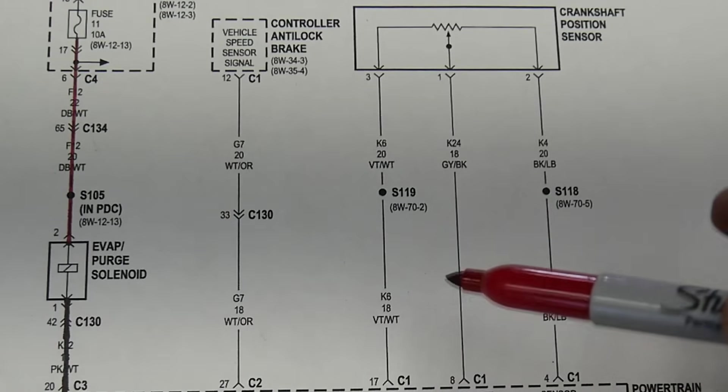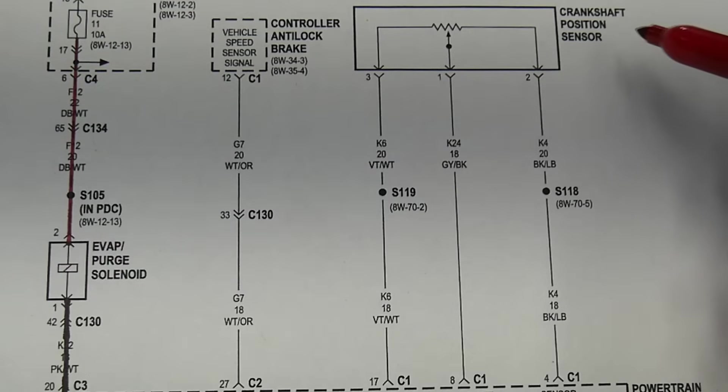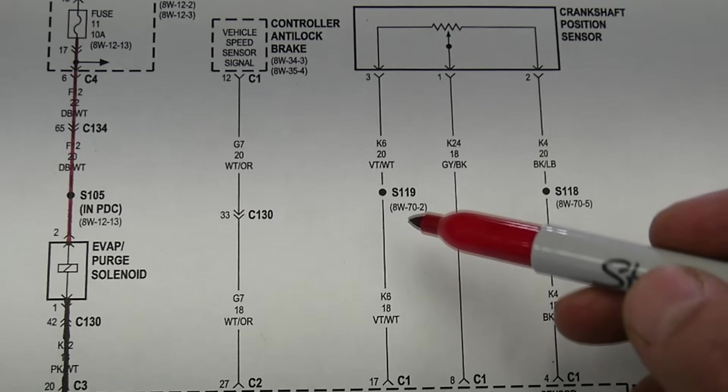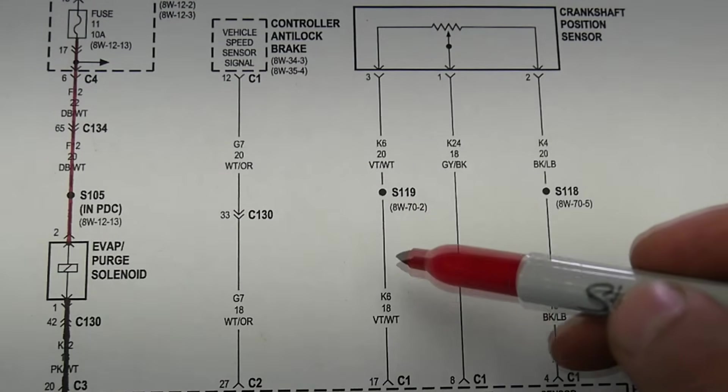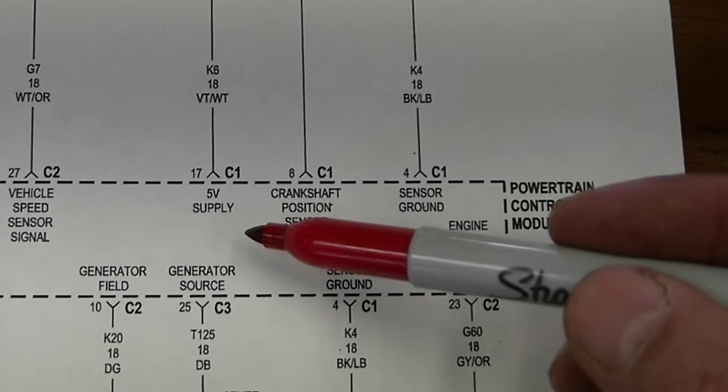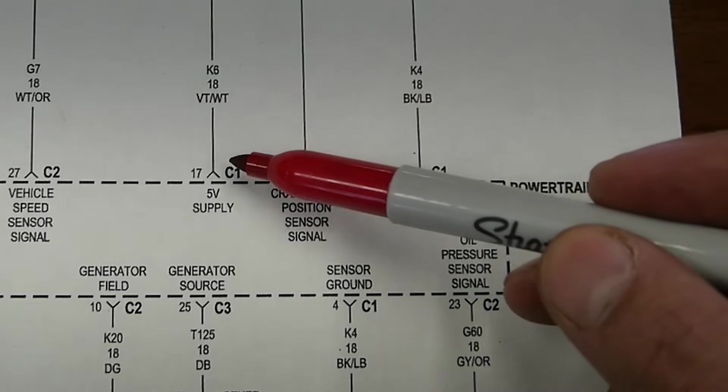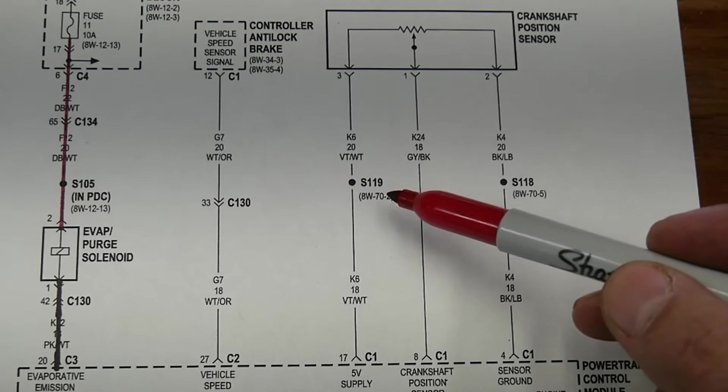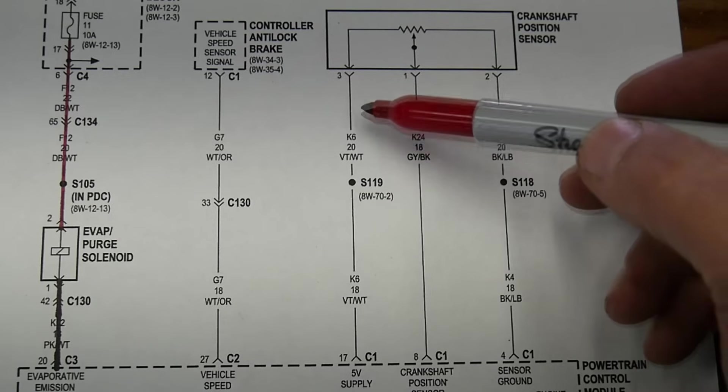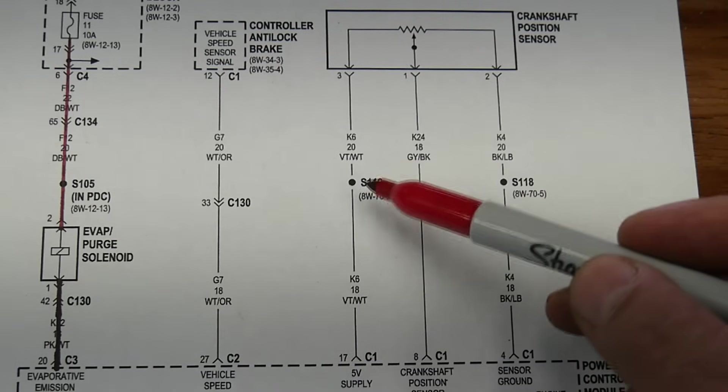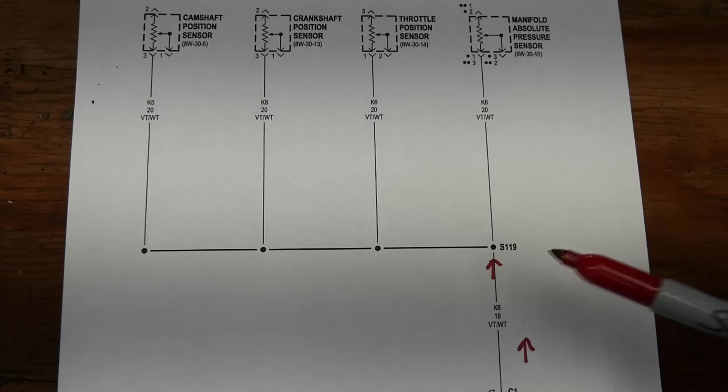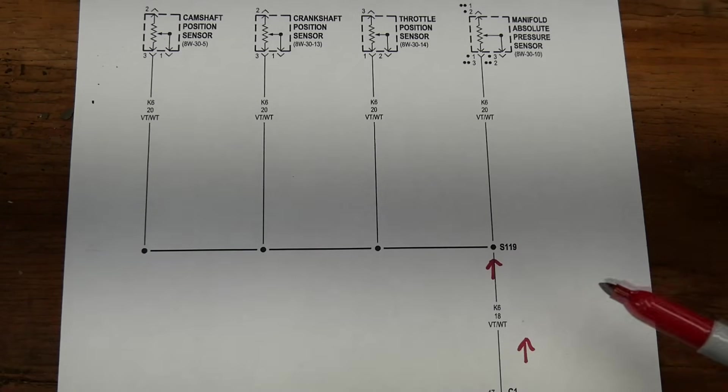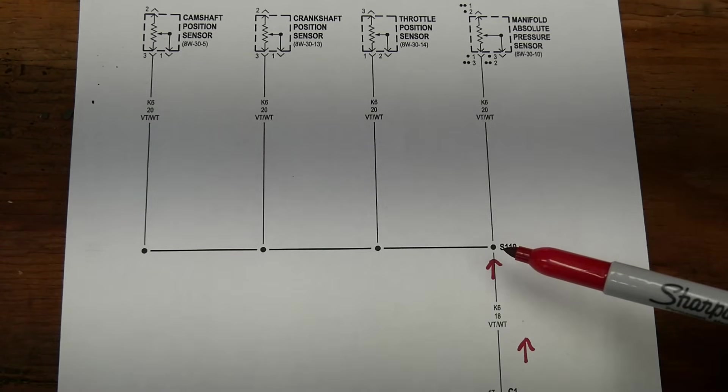Alright, so back to this graph. Let's say we're on this circuit for the crankshaft position sensor and we want to look up where power goes from here, because as you can see, 5 volts supply comes from your power control module, goes up this wire and then it splits off at S119. And then from there it also goes to your crankshaft position sensor. But where does it go from here? Well, you go to your repair manual, look up S119 and here's the graph. It goes here.